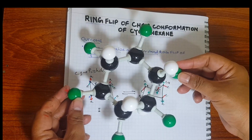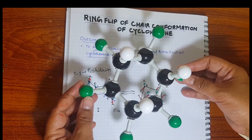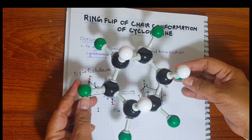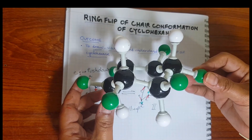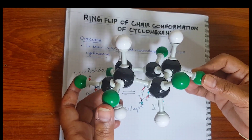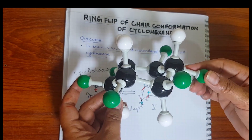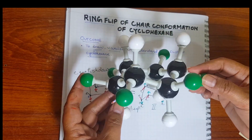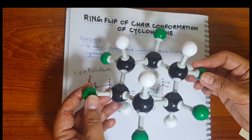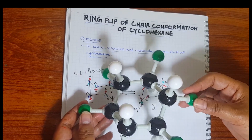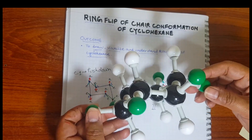This flipping or interconversion of form 1 to form 2 is very rapid in case of cyclohexane, but I have shown it slowly so that you can understand it better. It is quite rapidly converted from one form to another, and the reason is that its activation energy is only 42 kJ of energy, which can be achieved even at room temperature. So this interconversion happens at room temperature. Both these forms are equally stable having least strain. I hope you have understood this concept and now you are able to draw, visualize and understand the ring flipping of cyclohexane. Thank you.